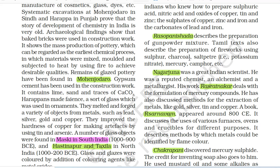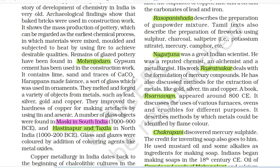Tamil texts also describe the preparation of fireworks using sulfur, charcoal, saltpeter (i.e. potassium nitrate), mercury, camphor, etc. Nagarjuna was a great Indian scientist. He was a prolific chemist, an alchemist and a metallurgist. His work, Ras Ratnakar, deals with the formulation of mercury compounds. He has also discussed methods for the extraction of metals like gold, silver, tin and copper.